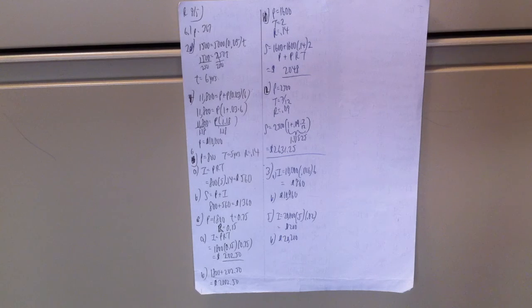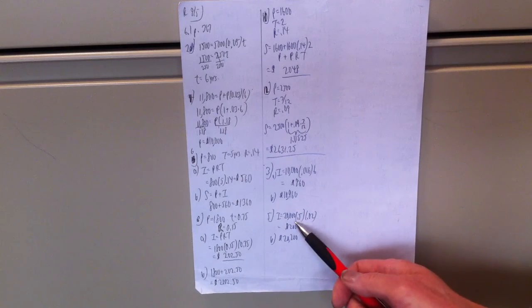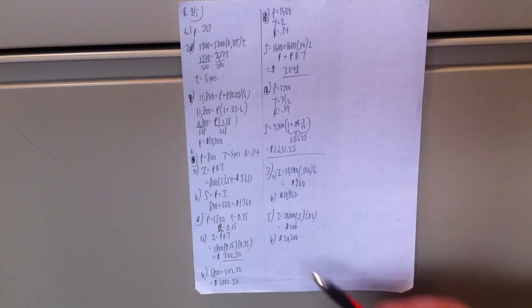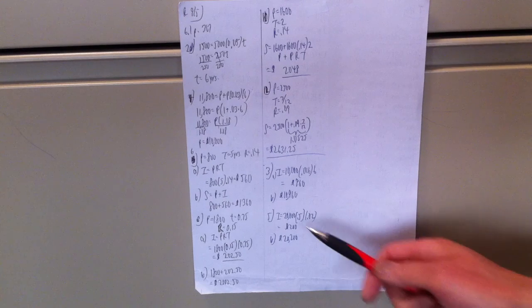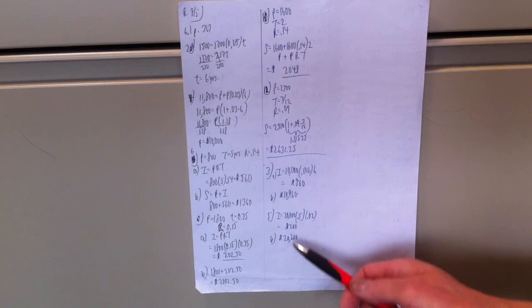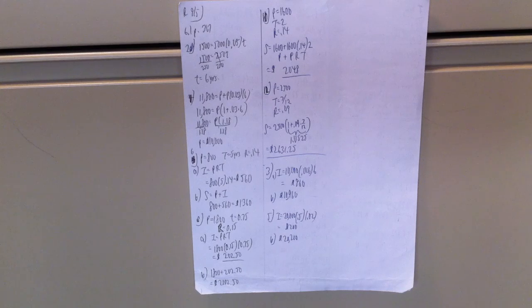Similarly, for problem 5, interest is principal times rate times time. $20,000 times 0.5 times 0.02 comes out to be $200. That's the interest. So what's the new amount, the future value? It's the old value, $20,000 plus the new interest of $200. That's $20,200. That was 6.1.